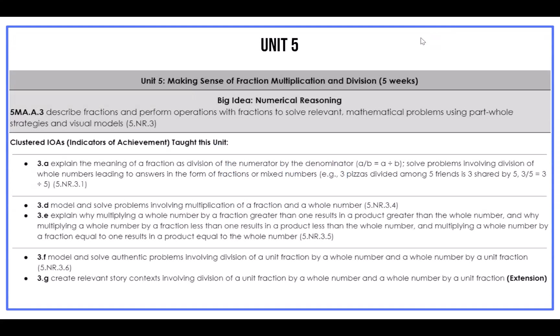Unit 5 picks up where Unit 4 leaves off with fraction operations. There are four IOAs: 3D, 3E, 3F, and a revisit to 5A. Under the AKS, you will find the Indicators of Achievement. We focus on the IOAs because this is how students show mastery of the AKS — think of the IOAs as the building blocks of the AKS. We have also provided the state's coding at the end of each IOA so you can find related resources on the Georgia DOE website.